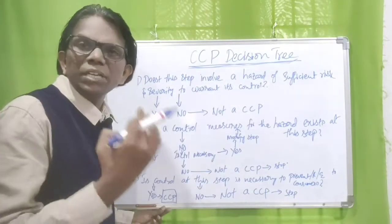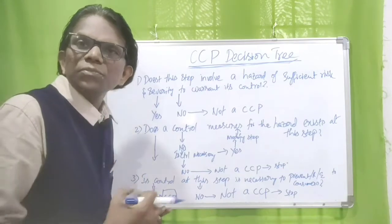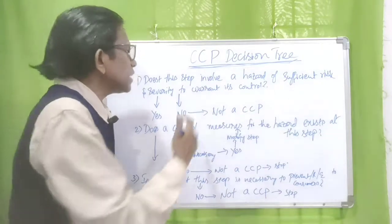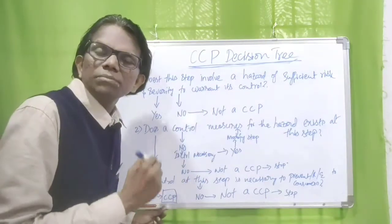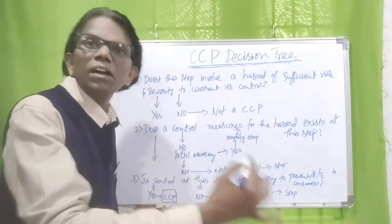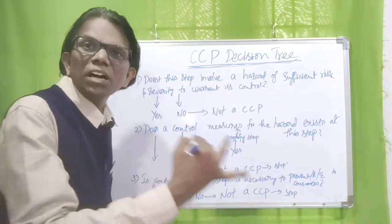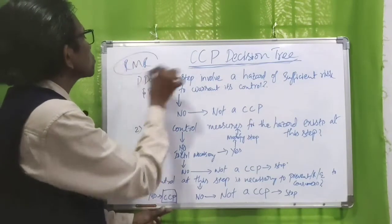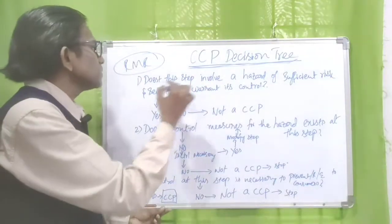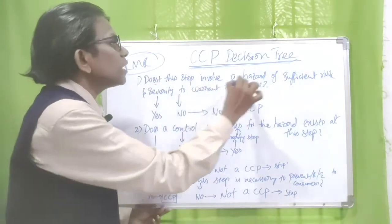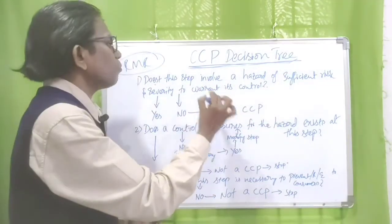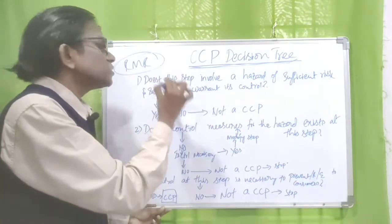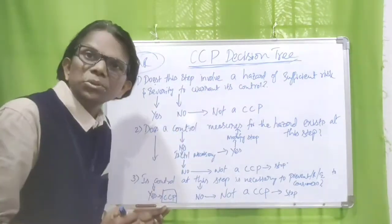Here we have taken two products. One is raw IQF frozen scombridae fish fillets, and we are looking at the receiving of raw materials — receiving scombridae wool from the harvesting vessel at the raw material receiving stage. The first question: does this step involve a hazard of sufficient risk and severity to warrant its control at raw material receiving stage?